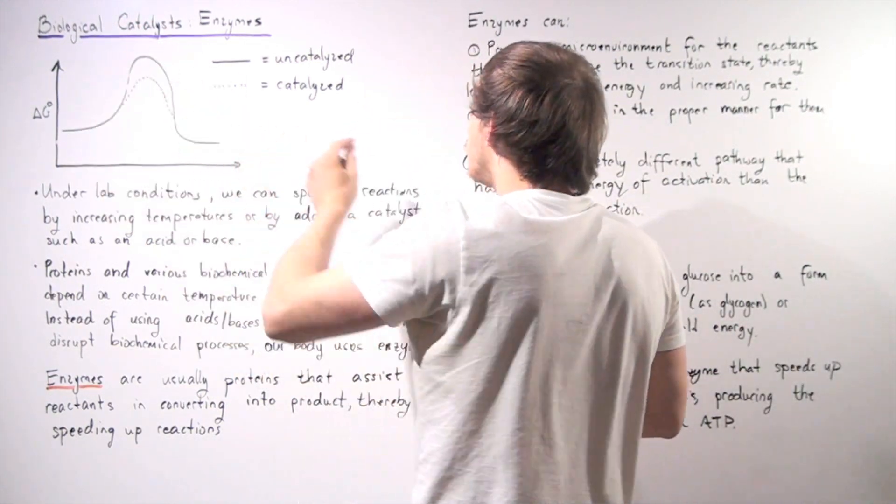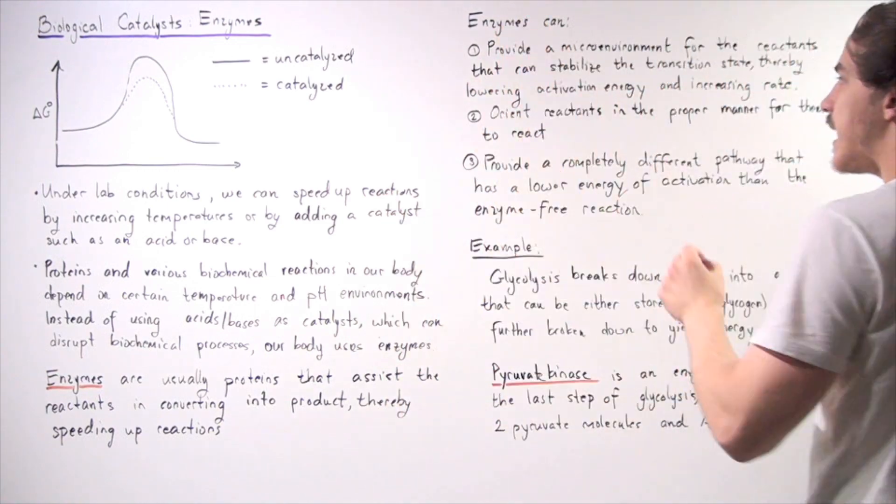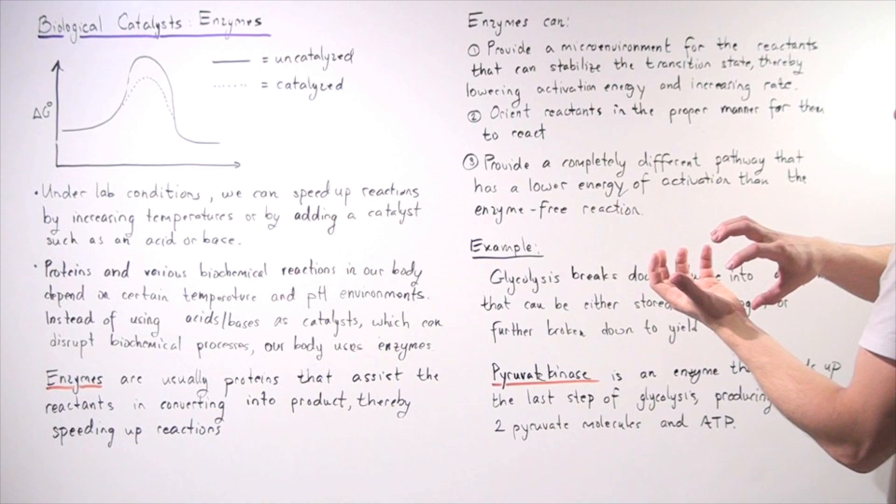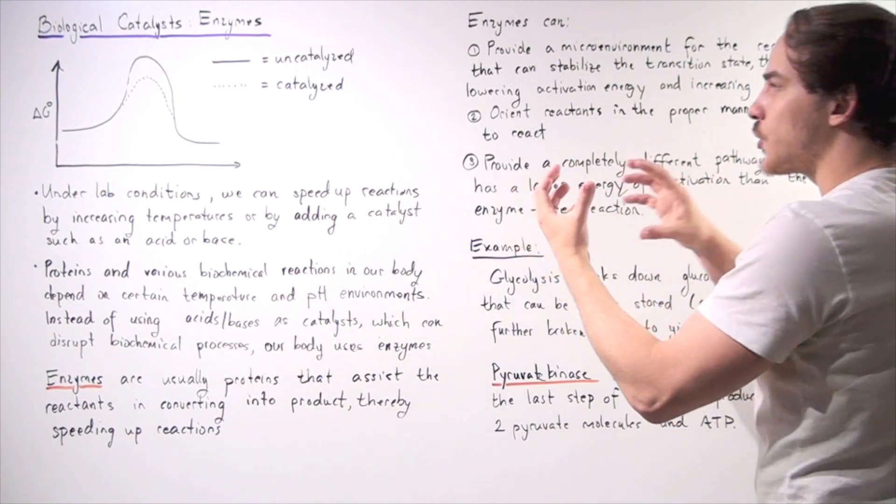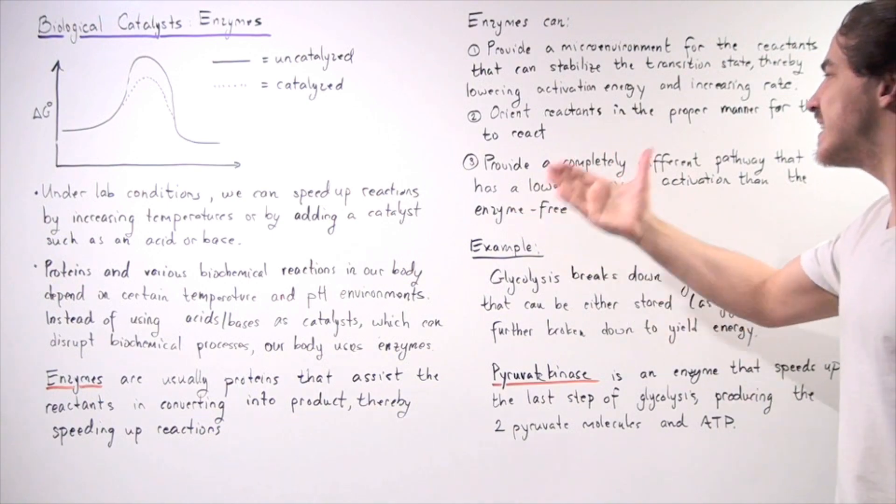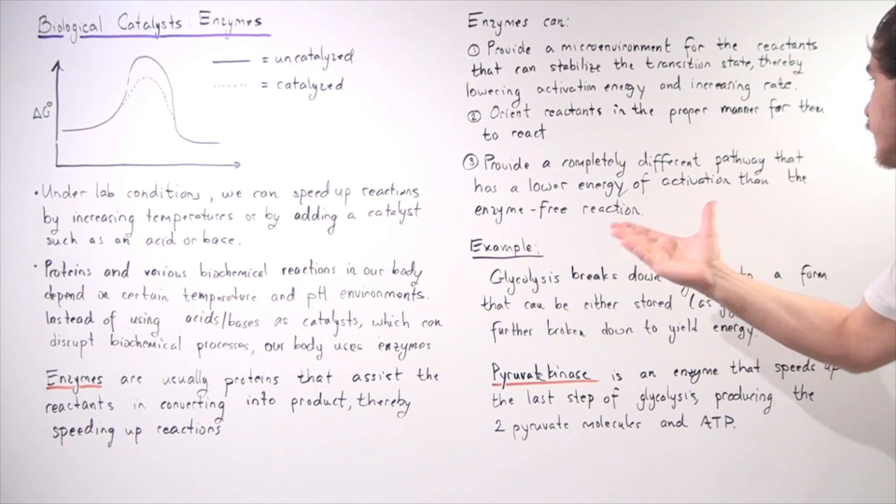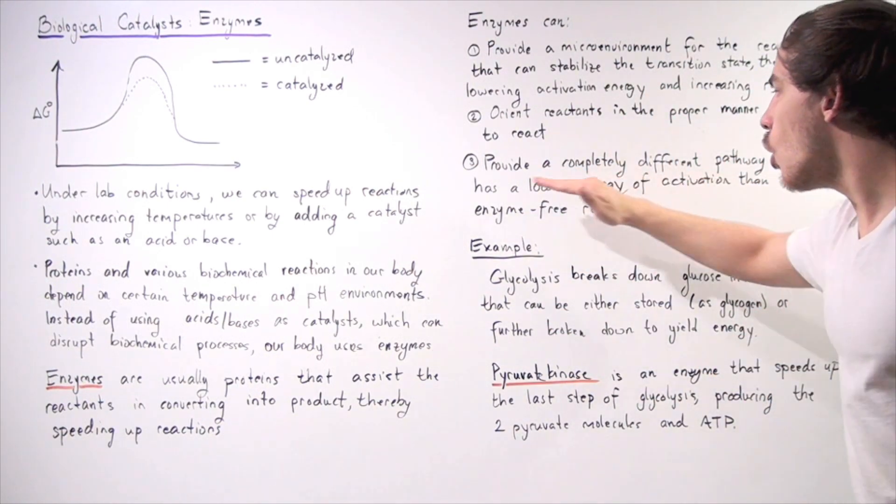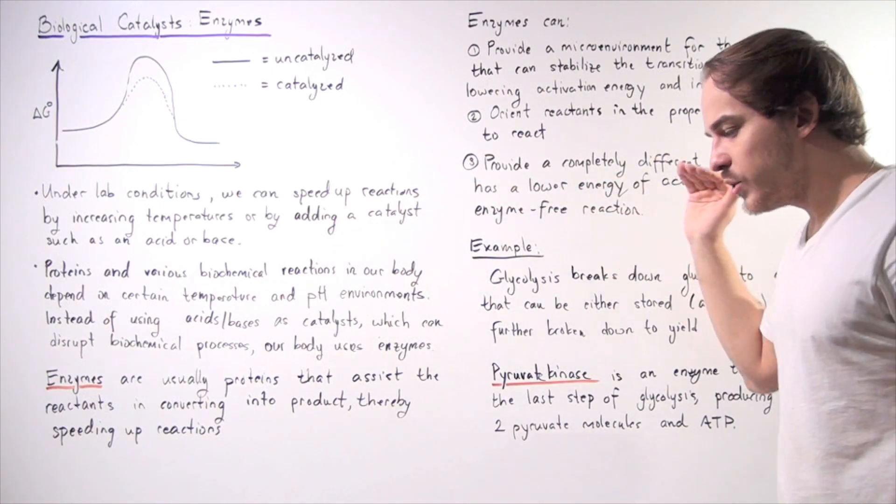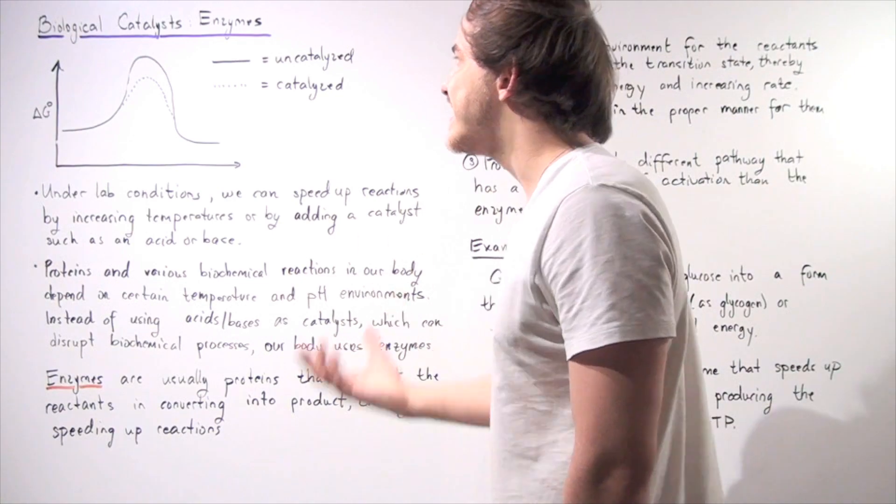Now, enzymes can also orient our reactants in a special way so that the reaction occurs at a quicker rate. And enzymes can also provide a completely different pathway, completely different mechanism that has a lower energy of activation than the enzyme-free reaction.